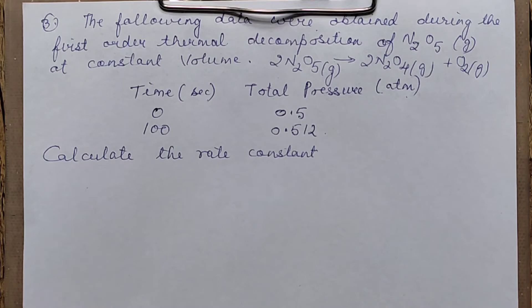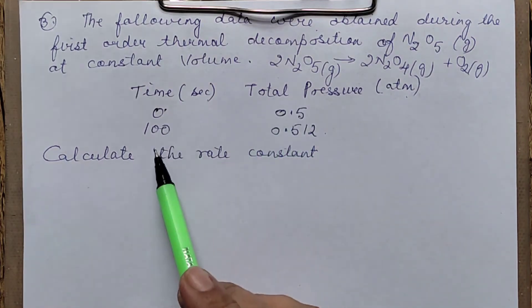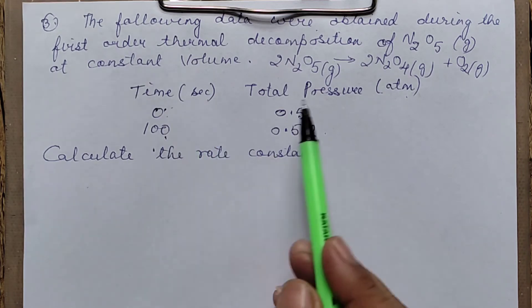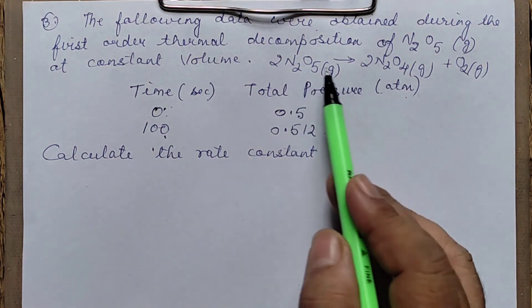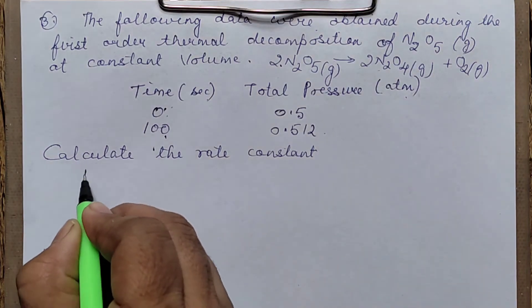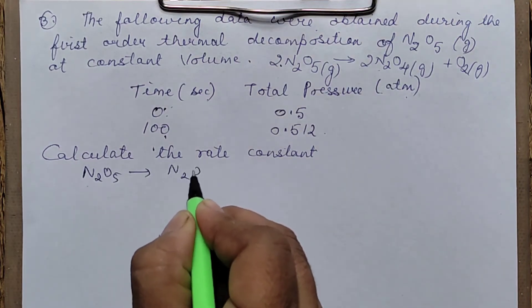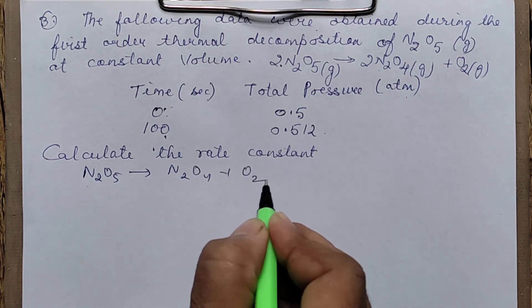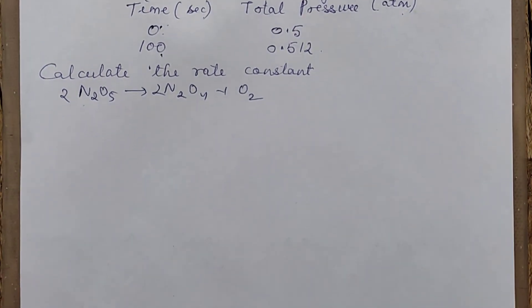Another pressure-format question. The equation involves N₂O₄ decomposing — but this is a different question where the coefficients are 2. It is not the same formula we used earlier. The balanced equation is 2N₂O₄ → products.